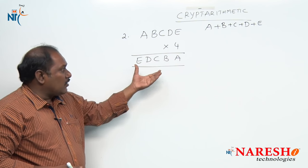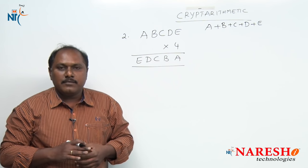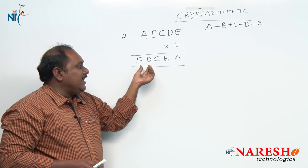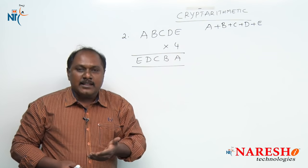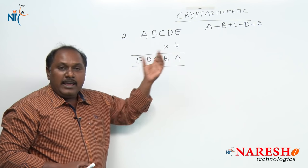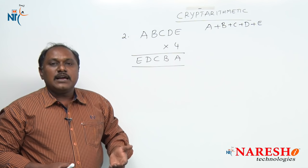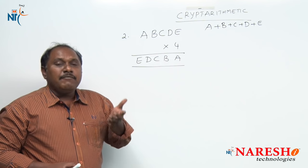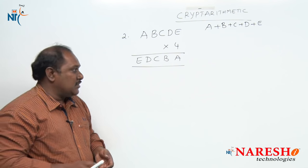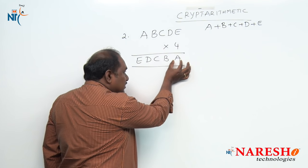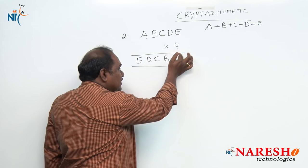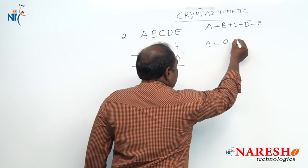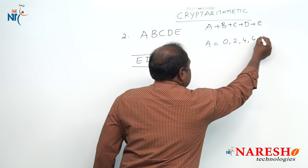Just by looking at this question, what should come to our mind? First, abcde multiplied by 4 gives edcba, so edcba is a multiple of 4. Multiples of 4 are always even numbers, so the units digit of edcba, which is a, can only be 0, 2, 4, 6, or 8. Because we are multiplying a number by 4 and the result's units digit is a, and multiples of 4 always end in an even digit.